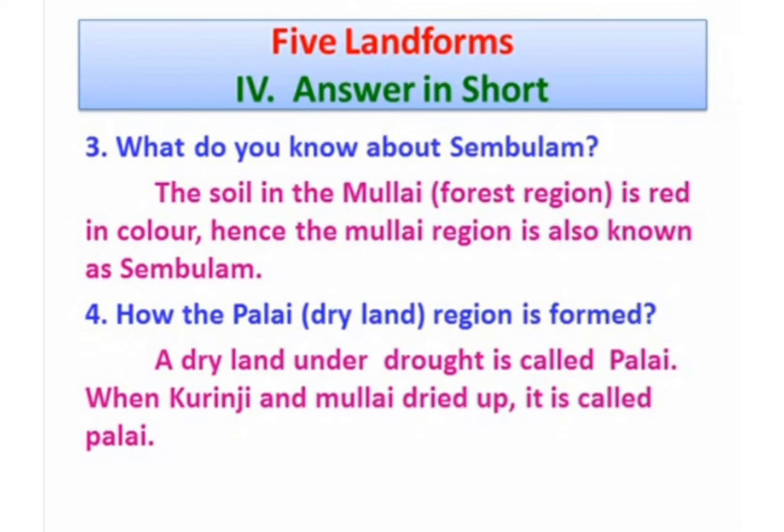Fourth one: how is Palai, the dry land region, formed? A dry land and a drought is called Palai. When Kurunji and Mullai dried up, it is called Palai.